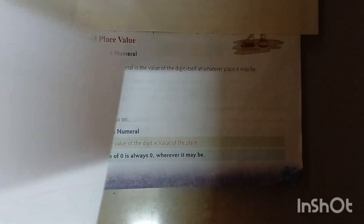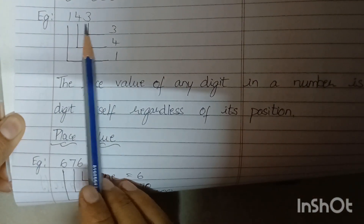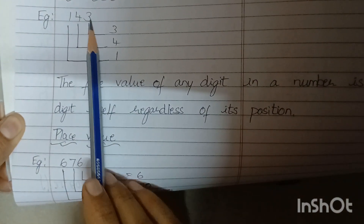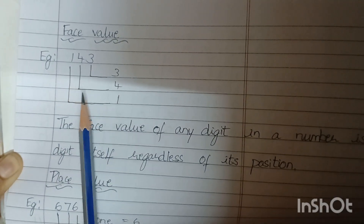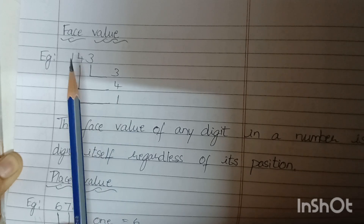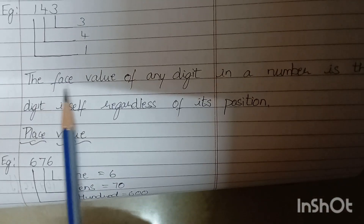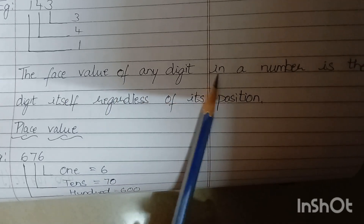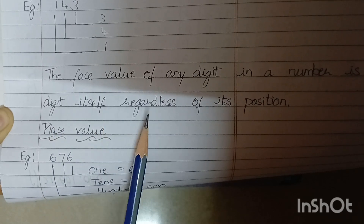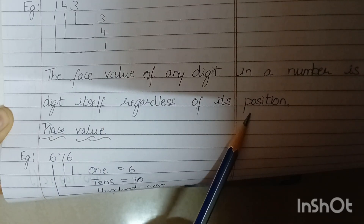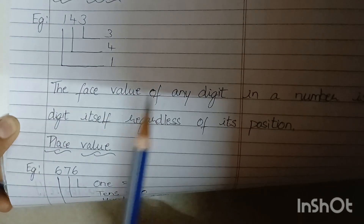Another example: in the numeral 143, the face value of 3 is 3, the face value of 4 is 4, and the face value of 1 is 1. The face value of any digit in a number is the digit itself, regardless of its position. The face value doesn't change — it will always be the same.